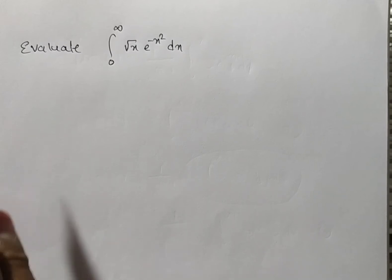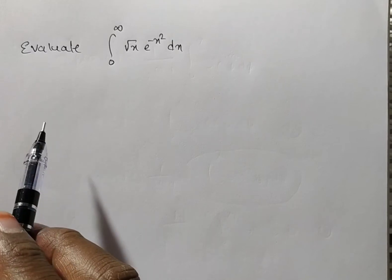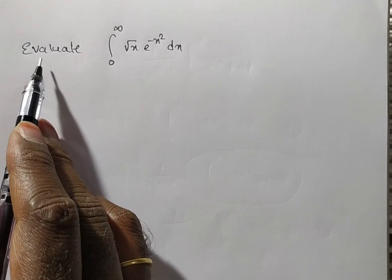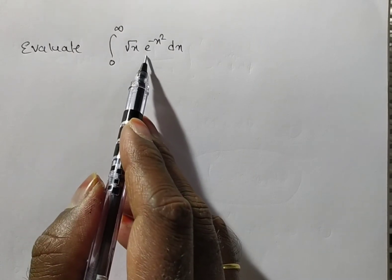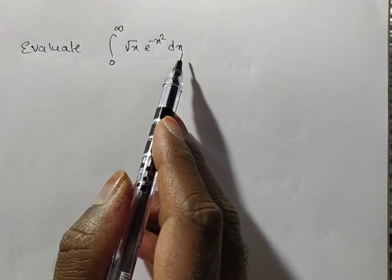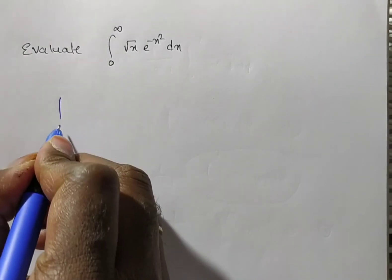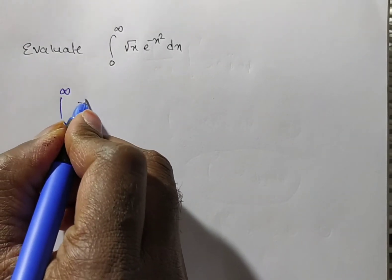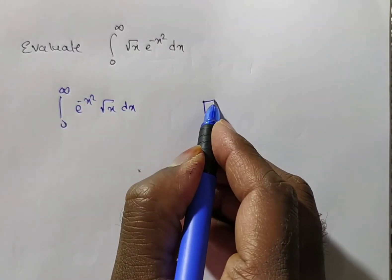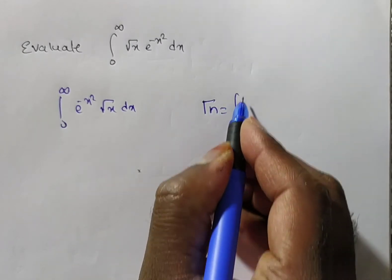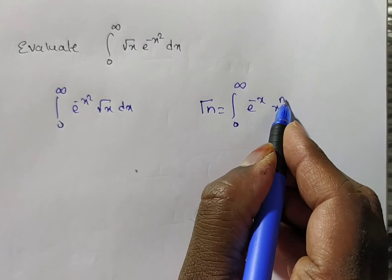Friends, now we are solving a problem on gamma function. The given problem is: evaluate the integral from 0 to infinity of root x times e to the power of minus x squared dx. We have the definition of gamma n, that is gamma n equals integral from 0 to infinity of e to the power of minus x times x to the power of n minus 1 dx.